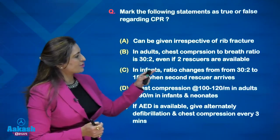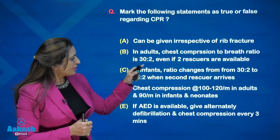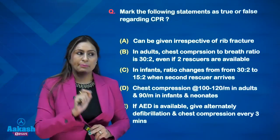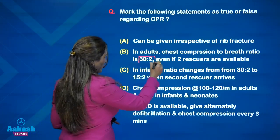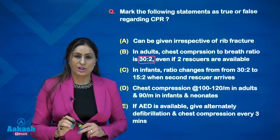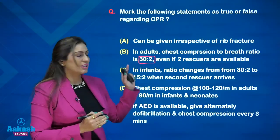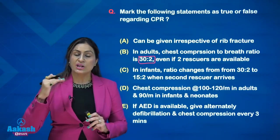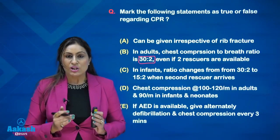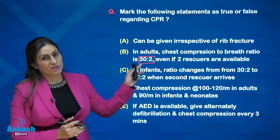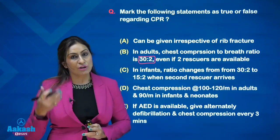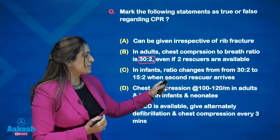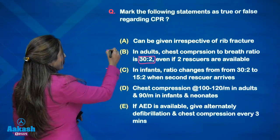In an adult, the chest compression-to-breath ratio is 30:2 regardless of whether there is one or two rescuers. AHA's extensive review shows that if the ratio is changed to 15:2, more compressions are needed to regain the previous level of coronary perfusion pressure, so 30:2 is the preferred ratio and leads to enhanced survival. For infants, however, the ratio changes from 30:2 to 15:2 when a second rescuer arrives.